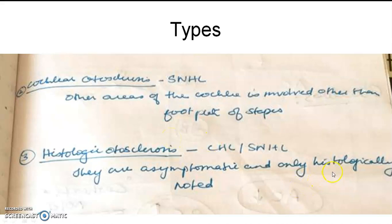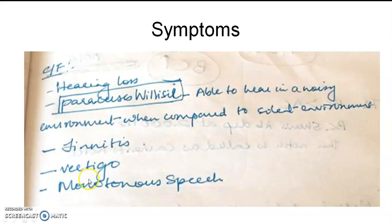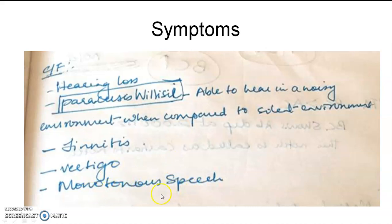The second type is cochlear otosclerosis, occurring anywhere along the cochlea other than the footplate of the stapes. The third type is histological otosclerosis, which is rare — most patients are asymptomatic and it is only a histological finding without symptoms. The symptoms of otosclerosis include conductive hearing loss, and the most unique symptom is paracusis willisii — hearing better in noisy environments — as well as tinnitus (ringing or hissing noise in the ear).